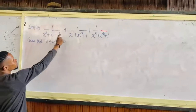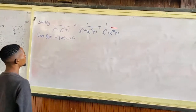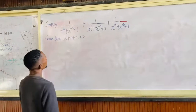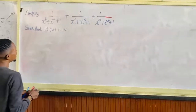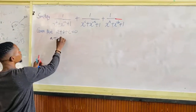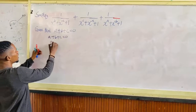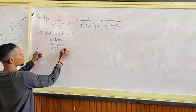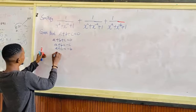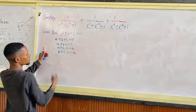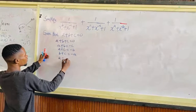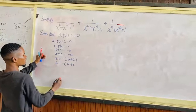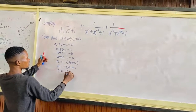Now if you look at the denominators here, they are not the same. We are given the condition that a plus b plus c is 0. Which means a plus b is minus c. And a plus c is minus b. And b plus c is minus a. Also, a is minus (b plus c), and b is minus (a plus c), and c is minus (a plus b).